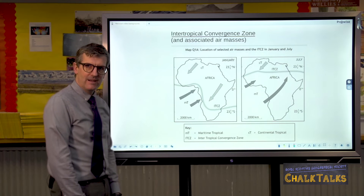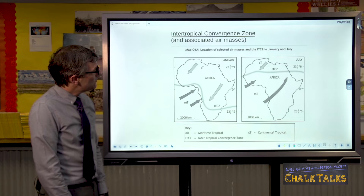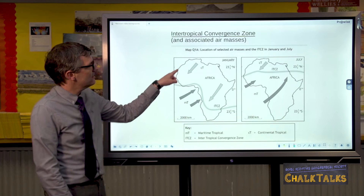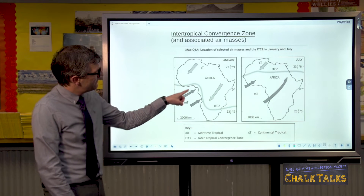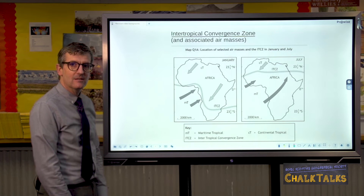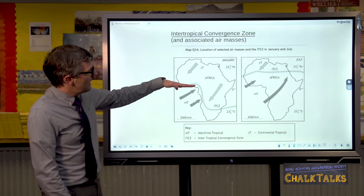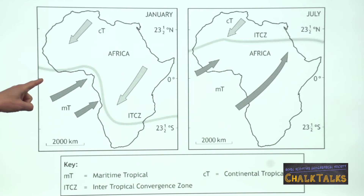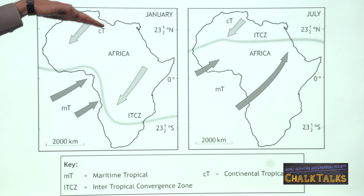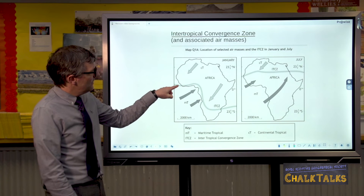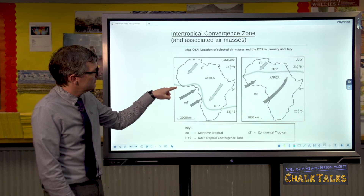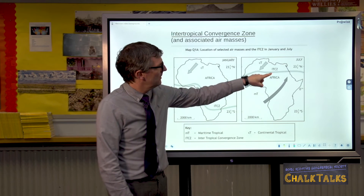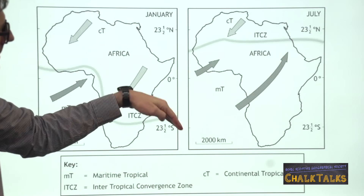It brings convectional rainfall because it's the hottest part. Associated with that are air masses. To the north you have tropical continental air, which is formed over the Sahara Desert, so it tends to be very dry. And to the south you have tropical maritime air, which is formed over the South Atlantic, so it tends to be very wet. As the ITCZ moves north and south, it brings this air with it as well. In January, the ITCZ is quite far south, and that means tropical continental air is dominating West Africa, making this very, very dry. The daily convectional rainfall is right down near the coast. In July, as it moves north, not only does it bring the daily convectional rainfall, but it also brings tropical maritime air across the continent, making it much wetter.